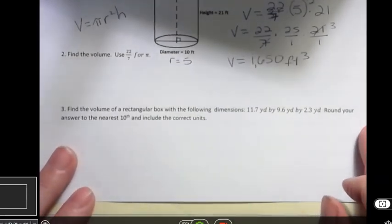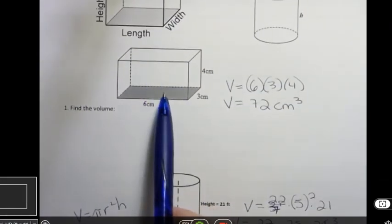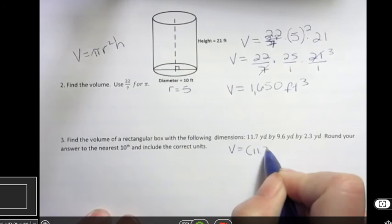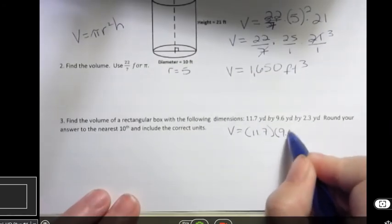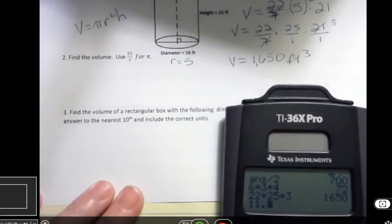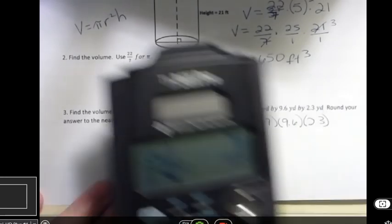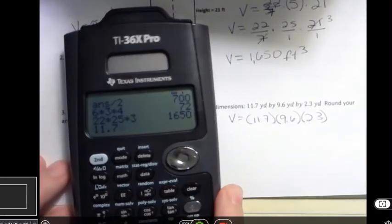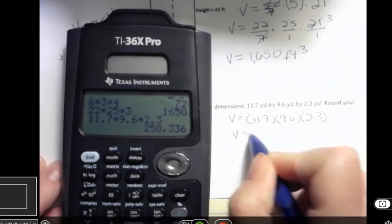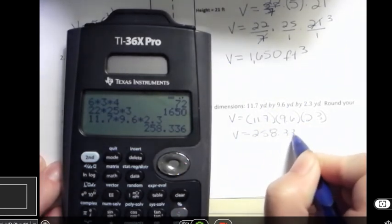And finally you might just be asked to find the volume of a rectangular box, but that's what we're talking about, something like this, even if they don't call it that, they just give you the dimensions. So you would again take your length times your width times your height and then multiply that, 11.7 times 9.6 times 2.3.